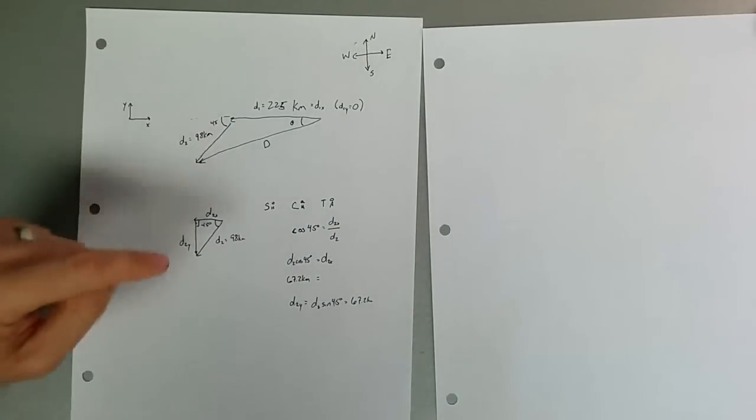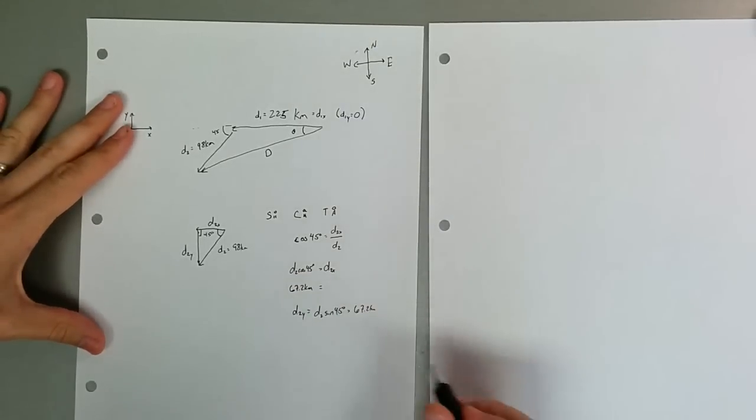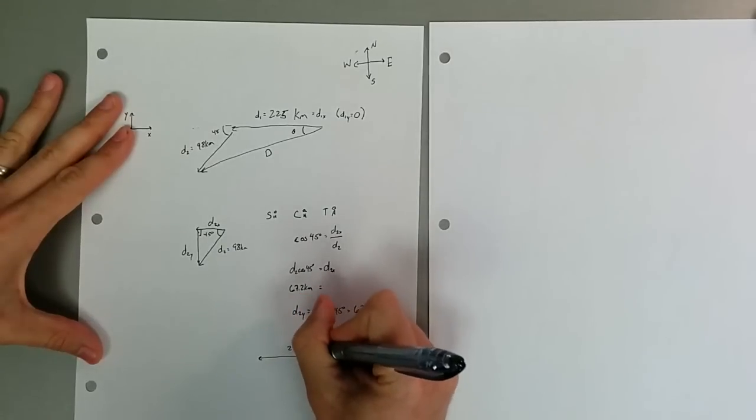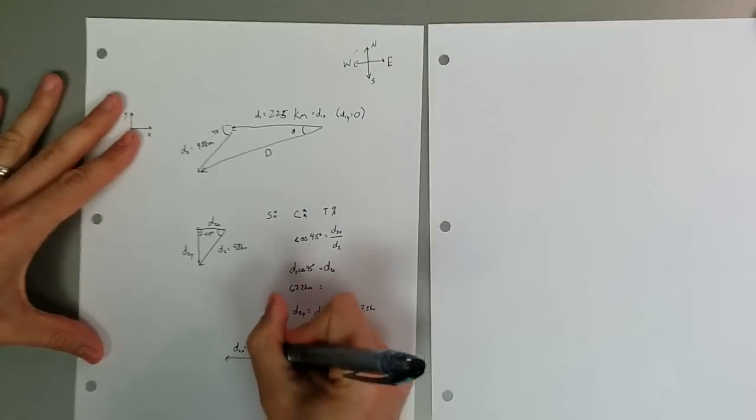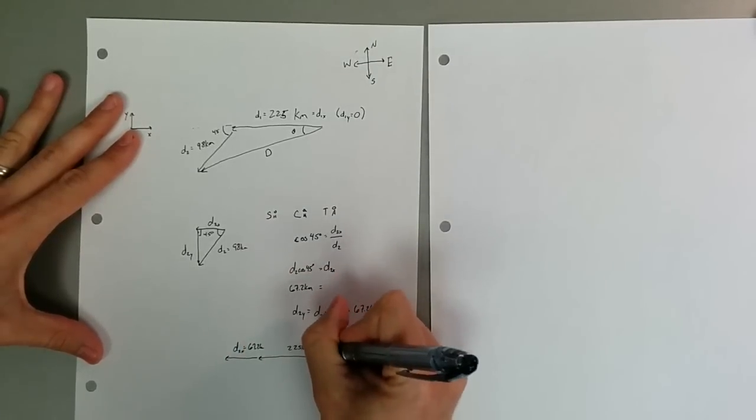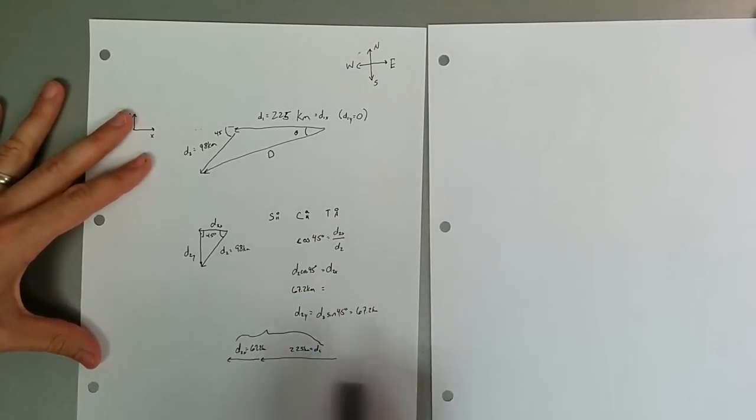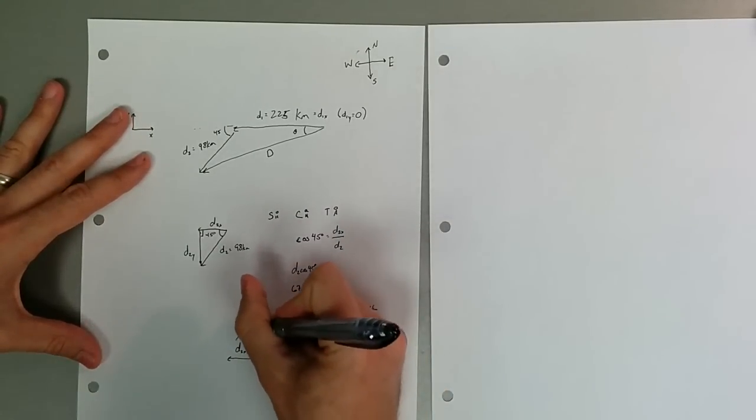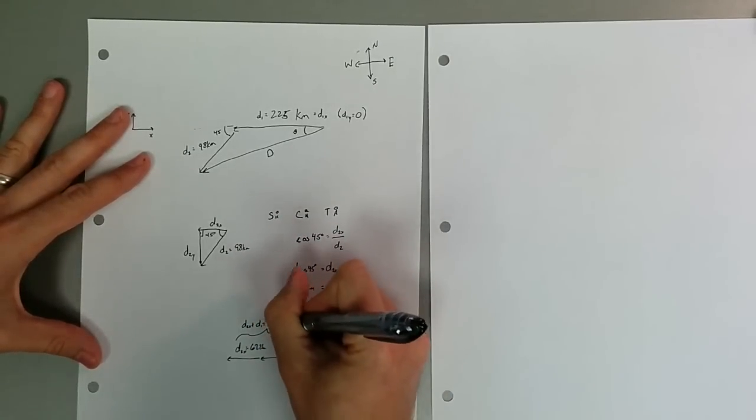Now, to get the total vector, what we're trying to do is find what d is. We can draw it two ways. It's this d1, which again is all in x, so it's 225 kilometers. Then it's this d2x, which in this case is now 67.2 kilometers. If we add those two together, the x component is just d2x plus d1 is equal to 292 kilometers.